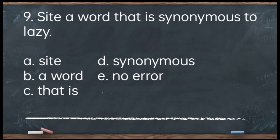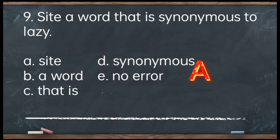Number 9. Cite a word that is synonymous to lazy. A. Cite. B. A word. C. That is. D. Synonymous. E. No error. The answer is letter A — 'cite.' The word 'cite' there is not properly used. It should be spelled C-I-T-E. When you say 'cite,' you should mention an example.